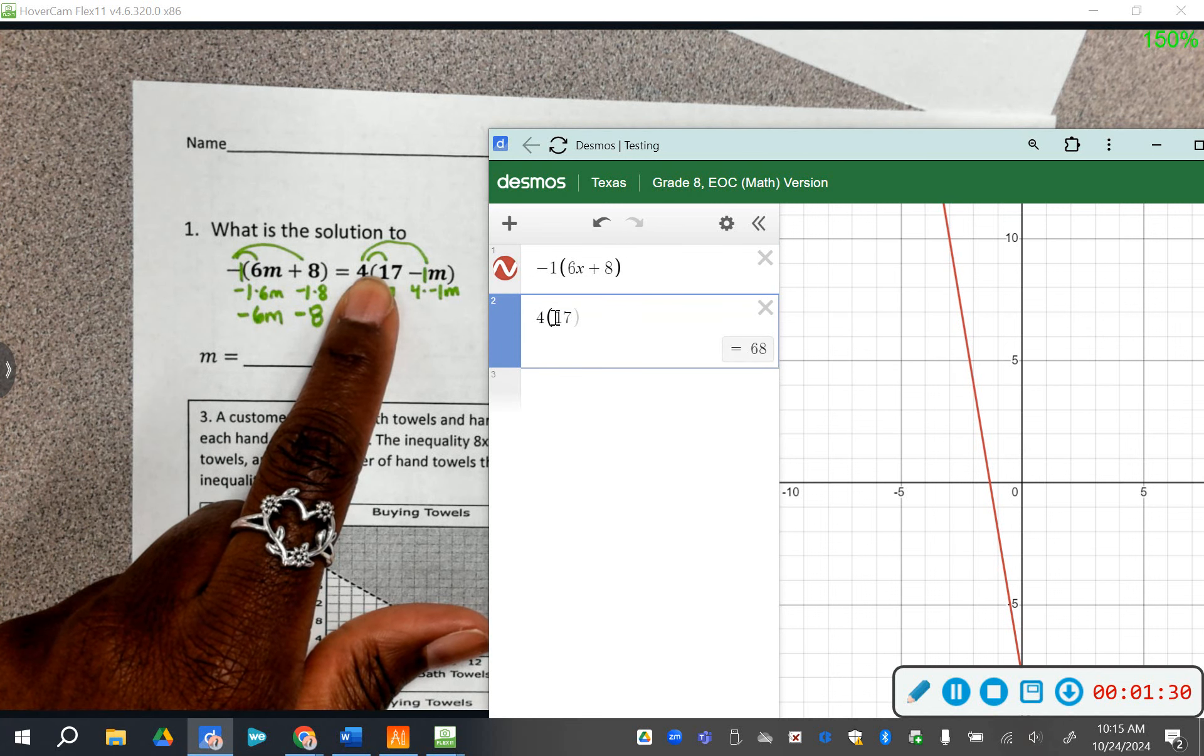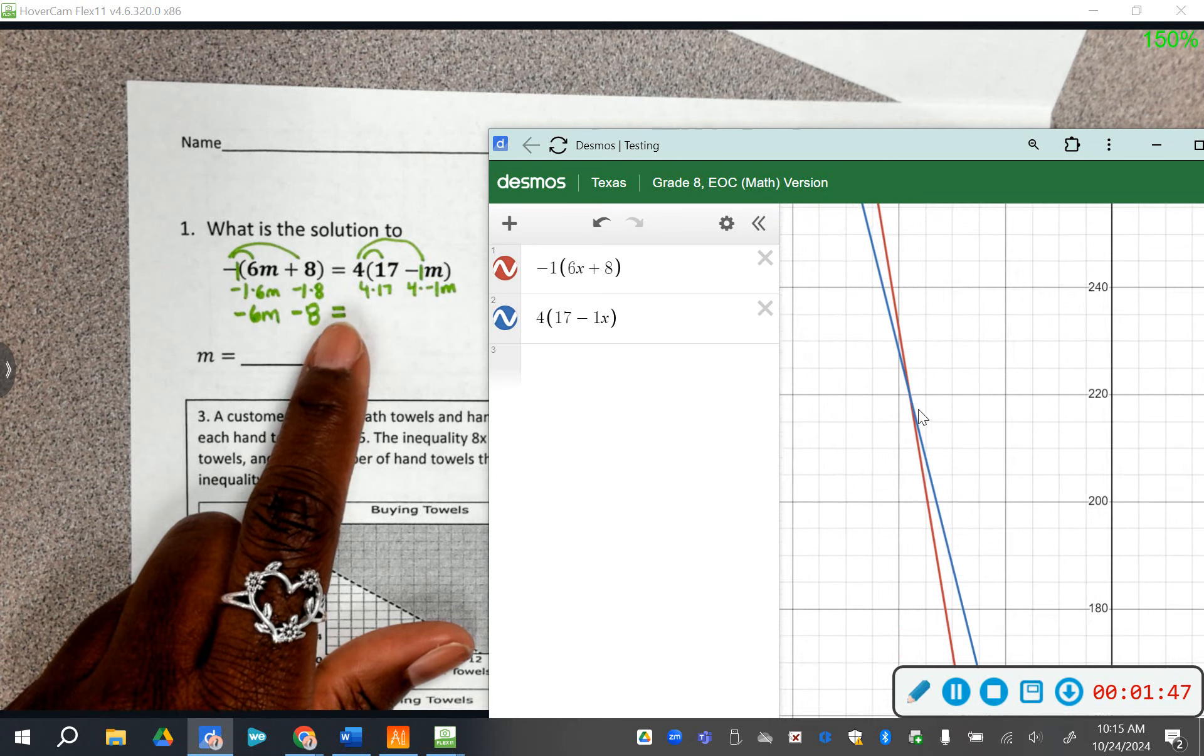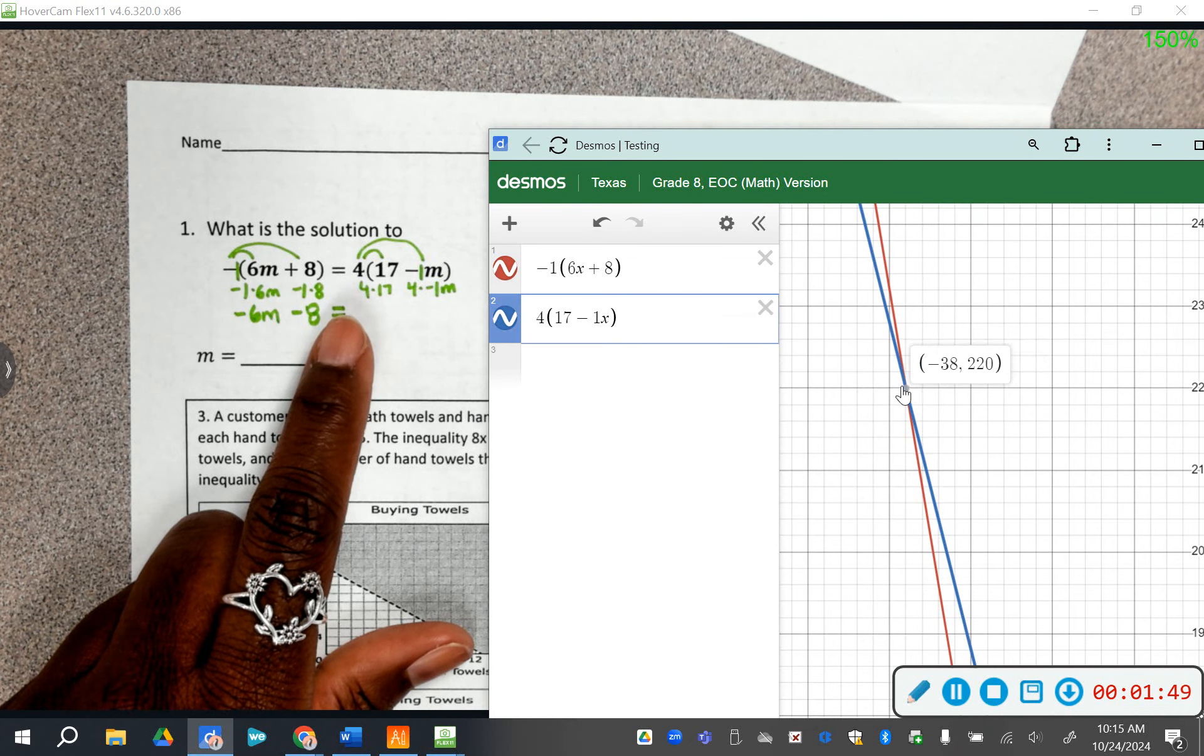This is just me reminding you how to get the problem. Some of the problems will work this way, especially if it's whole numbers. You're going to look for where the red and the blue cross. So I've got to either scroll up or zoom in, zoom out to find where the two lines cross.